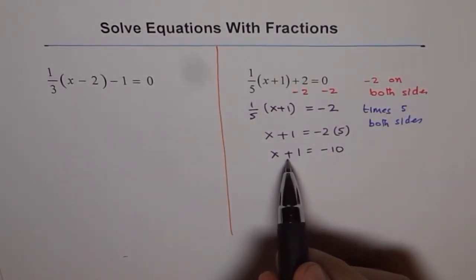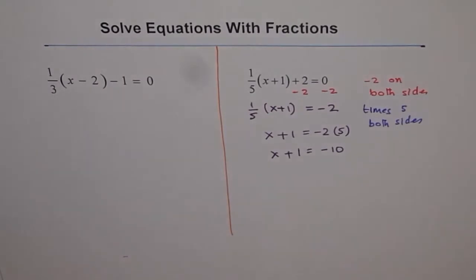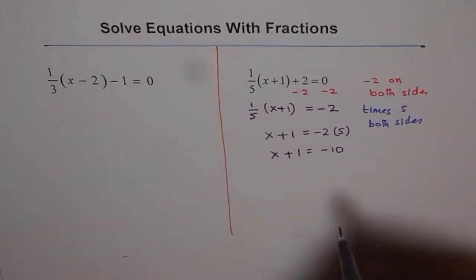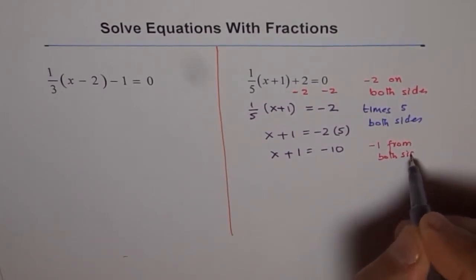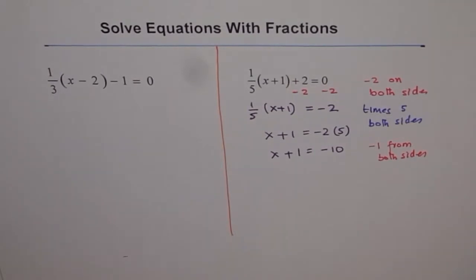Now we need to get rid of plus 1 from here to find what x is. So let's take away 1 from both sides. So anything you do, you do the same thing on both the sides.